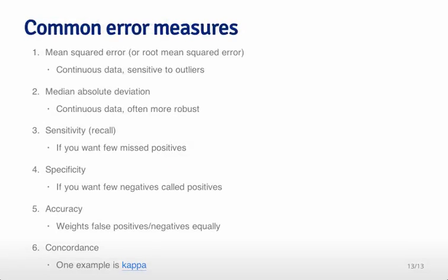For continuous data, people often use mean squared error or root mean squared error, but it doesn't work well when there are a lot of outliers or variables on very different scales, because it will be sensitive to those outliers — one really large value can raise the mean significantly. Instead, people often use the median absolute deviation: you take the median of the distance between the observed and predicted value, using absolute value instead of squaring. This is more robust to the size of those errors.